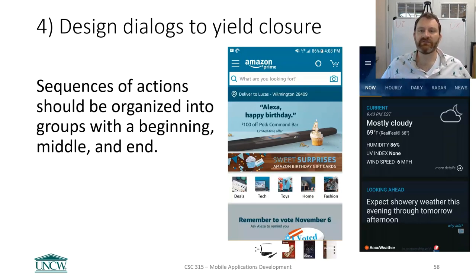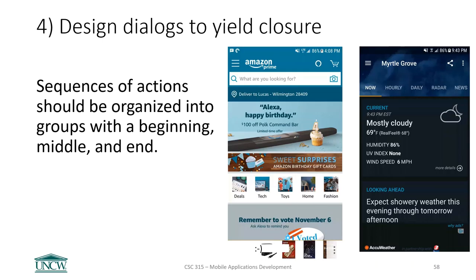Golden rule four: design dialogues to yield closure. Sequences of actions should be organized into groups with a beginning, middle, and end. If your app does something complicated — like ordering from Amazon or adding a song to a playlist — make sure the sequences of actions clearly have an end, and that you clearly communicate that end to the user.